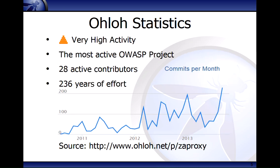There's a site called Ohloh which gives great stats. It tracks hundreds of thousands of open source projects and rates them based on activity. ZAP is in the highest category — right up there with the Linux kernel and Firefox. We actually have an OWASP project on Ohloh with all the open source tools, and ZAP is the most active OWASP project by some margin. We had 28 people contribute code last year, and Ohloh calculates 236 years of effort — I'm a bit dubious about that figure, but there you go.